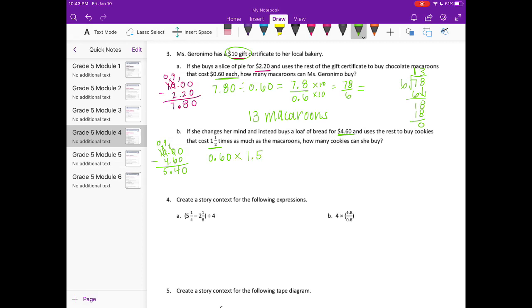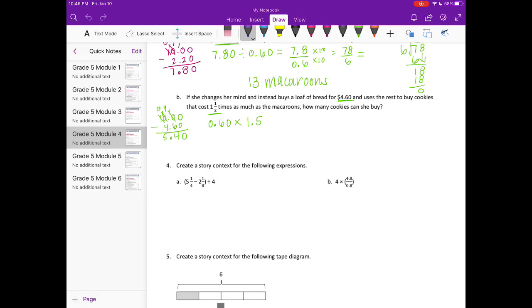The cookies cost one and a half times as much as the macaroons. So we can do one and a half, I'm going to do one and five tenths. Instead of multiplying, I'm going to reason through it. If I have one and a half times sixty hundredths, I know that I have sixty hundredths plus half of that. There's the whole one times, plus five tenths of that would be thirty hundredths. So I know that this is equal to ninety hundredths. That's how much a cookie costs, ninety cents. If I do five and forty hundredths over ninety hundredths, or five and four tenths, I'm going to multiply them both by ten, now get 54 divided by 9. Fifty four divided by nine is equal to six, so there will be six cookies.